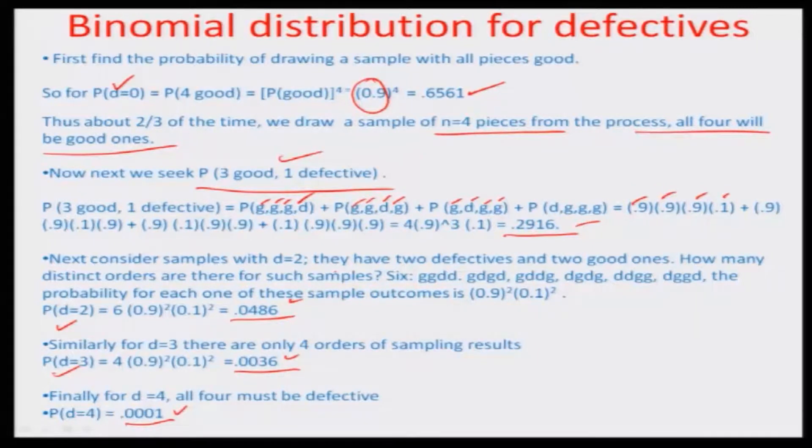We will round off this module here. In the next module we will see how using combinations we can arrive at the same probabilities, and after these examples we will look at the distribution being formed — relating the combinatorial approach with the distribution so we can represent acceptance sampling methods in terms of fraction good and fraction defective, enabling straightforward probability calculations. Thank you.